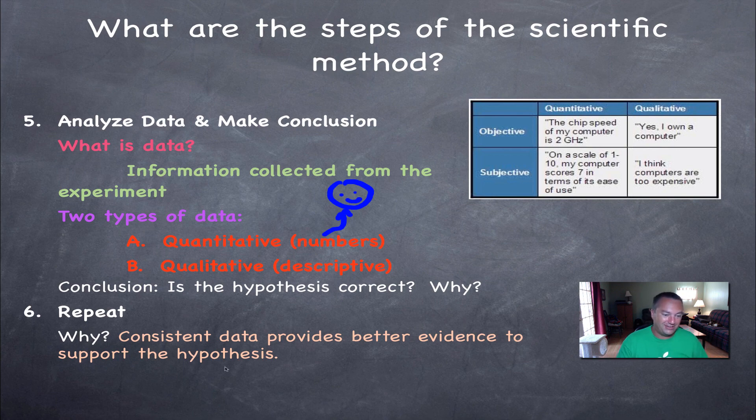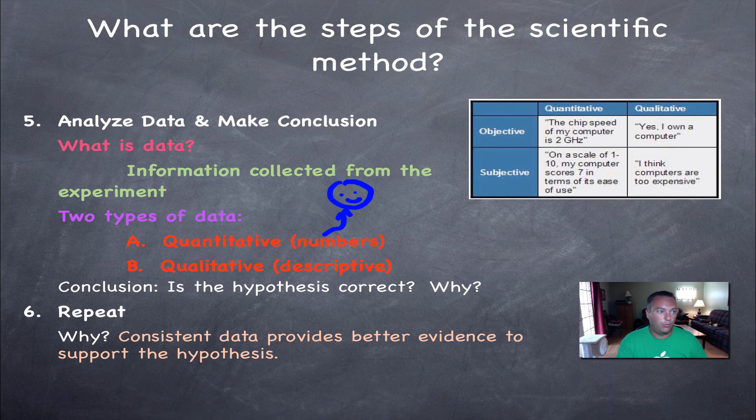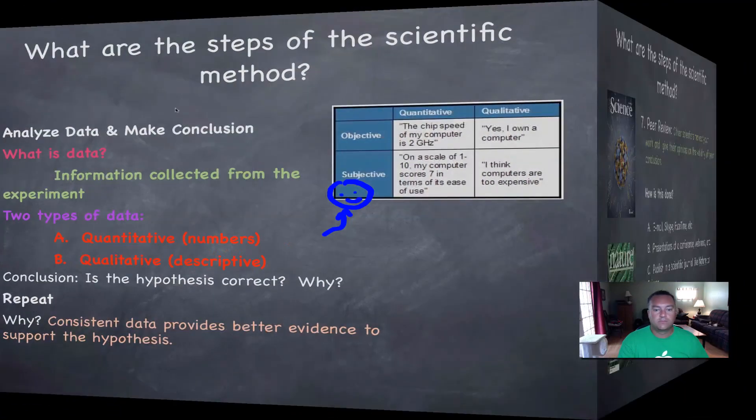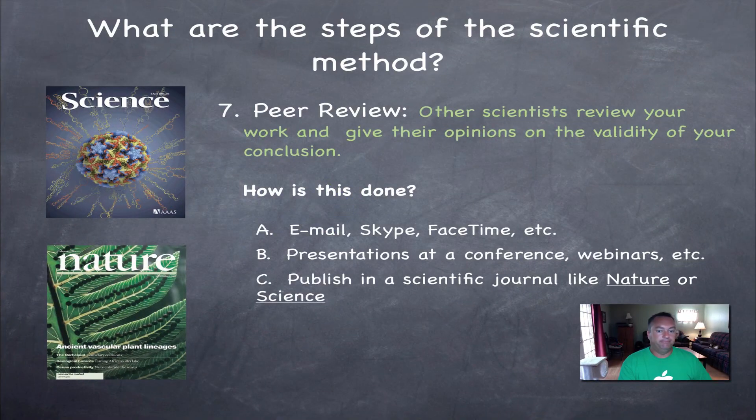So here we go. Repeat. Why do I want to do this data again? Or why do I want to redo my experiment? Because I want to know if my data is consistent. Consistent data really, really hones in that your hypothesis was a good one. Because it's very repeatable. Over and over again, your prediction comes out to be true. Very important in science. We want things that can be shown to happen time and time again. It's great evidence to support your work.